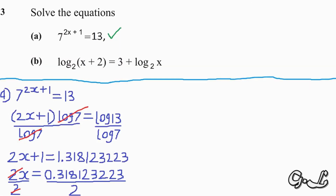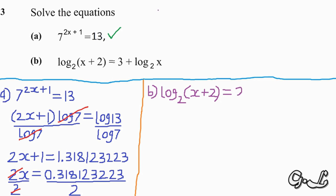Now let's go to Part B. Part B says that log base 2 of open bracket x plus 2 close bracket is equal to 3 plus log base 2 of x. Let's attempt that.